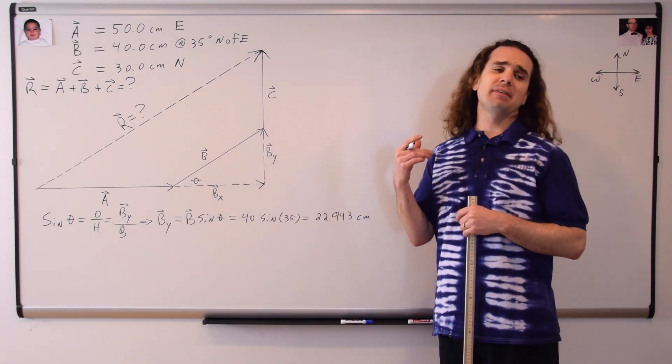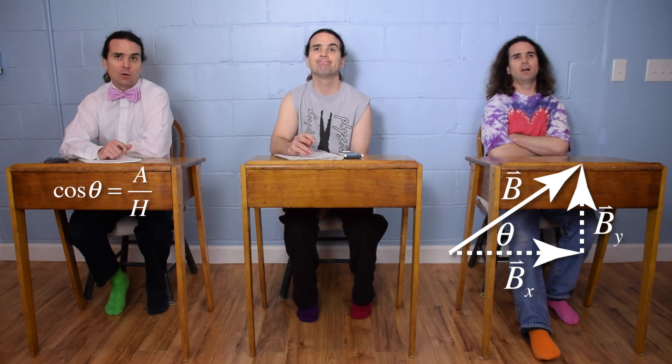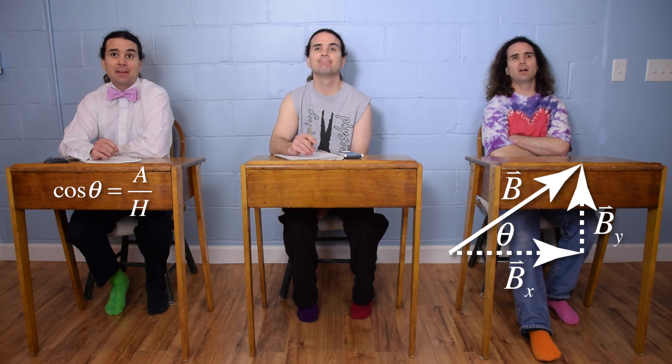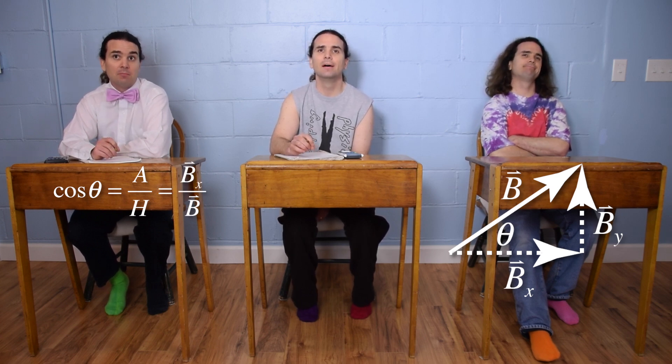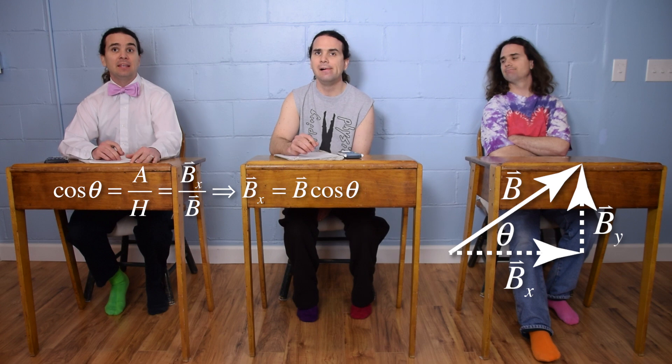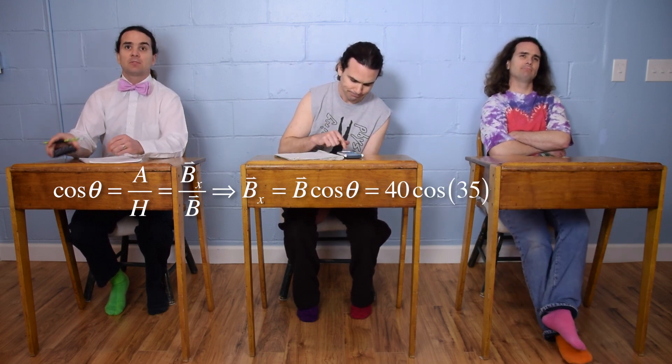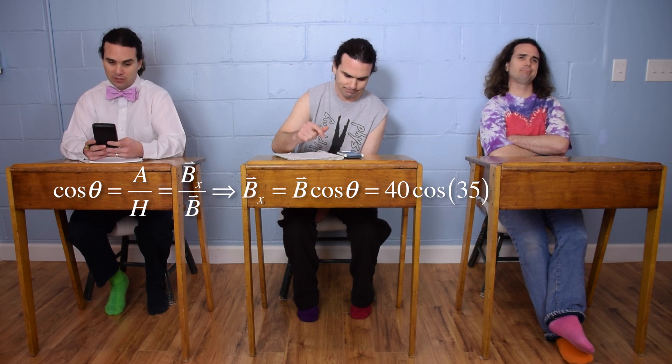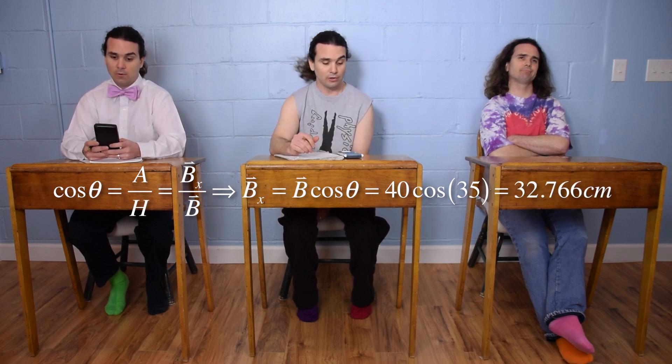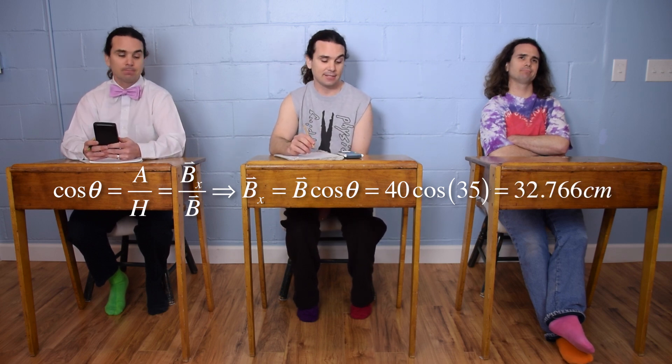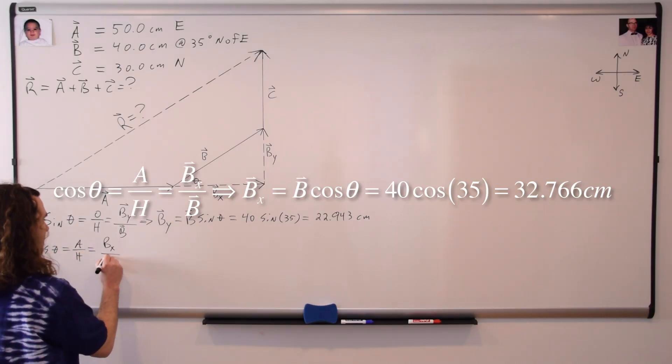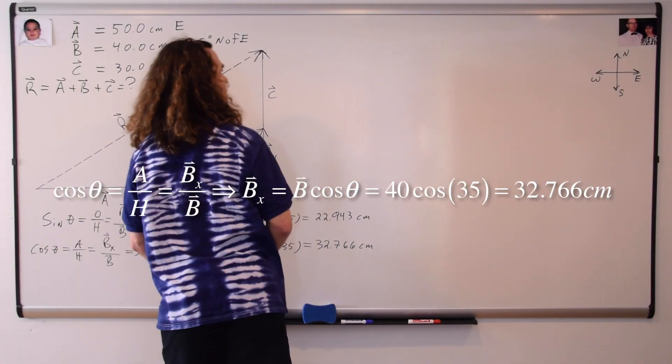And Billy, how do we find the component of vector B in the x direction? Cosine theta equals adjacent over hypotenuse, or the component of B in the x direction over vector B, multiplied by B to get B in the x direction equals B times the cosine of theta, or 40 times the cosine of 35, which is equal to 32.766 centimeters.